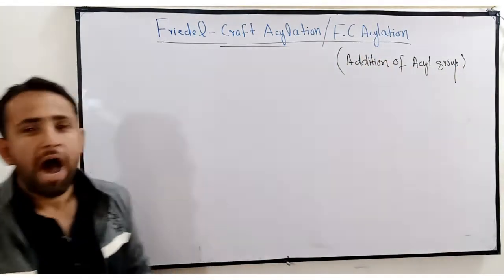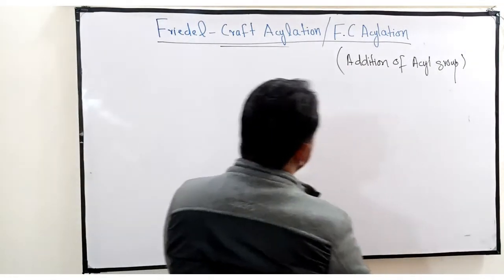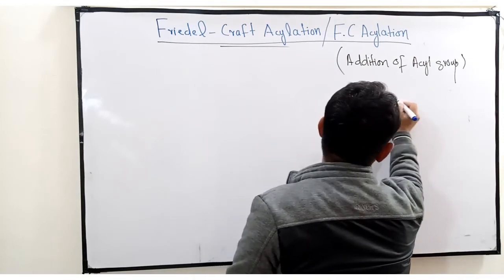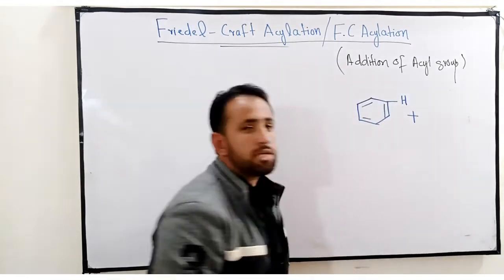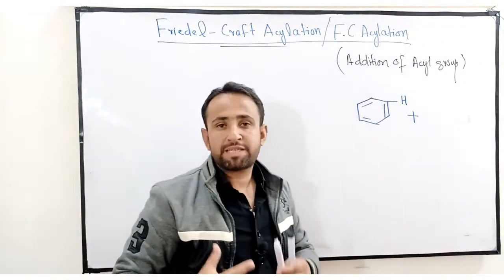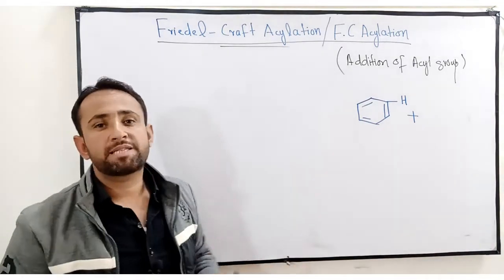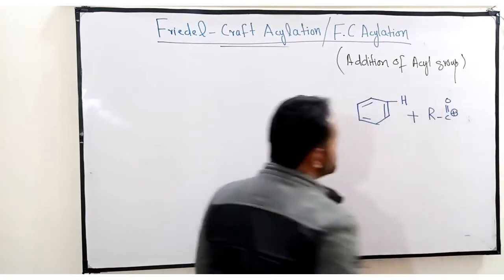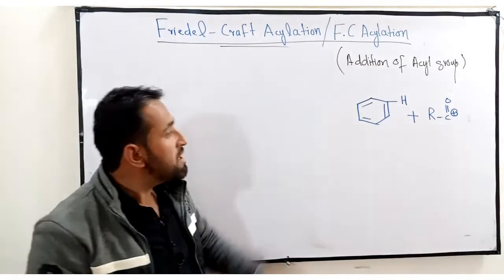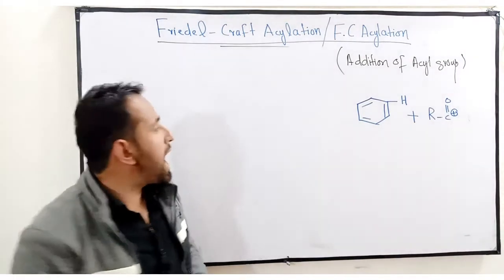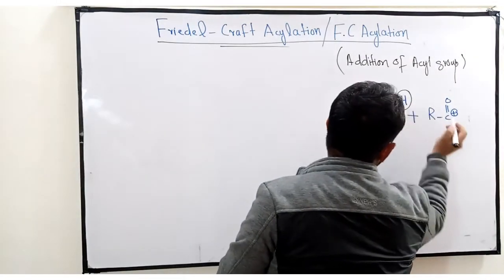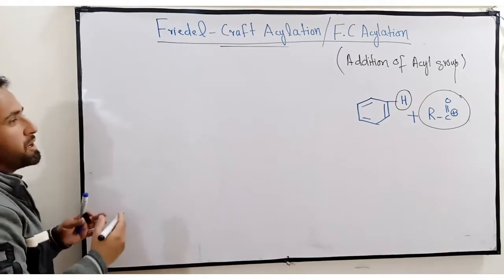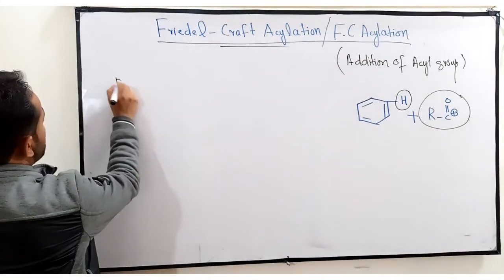What is Friedel-Crafts acylation? Suppose this is a benzene molecule with one hydrogen atom. We will react an acylating agent — the compound which provides an acyl group. A positive charge is generated on the acyl group, which is why it is known as an acylium ion. This hydrogen atom of benzene is replaced by this part of the acylating agent.